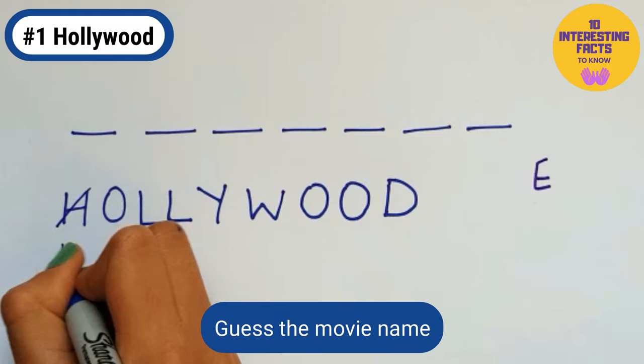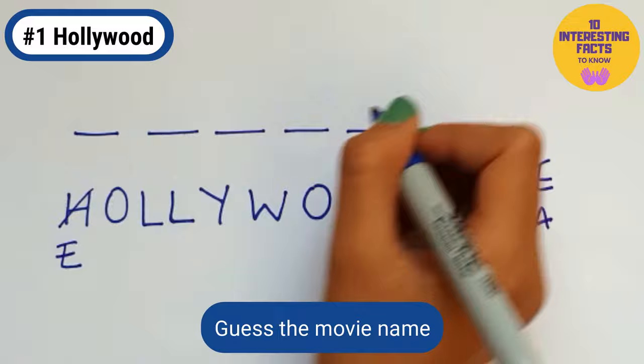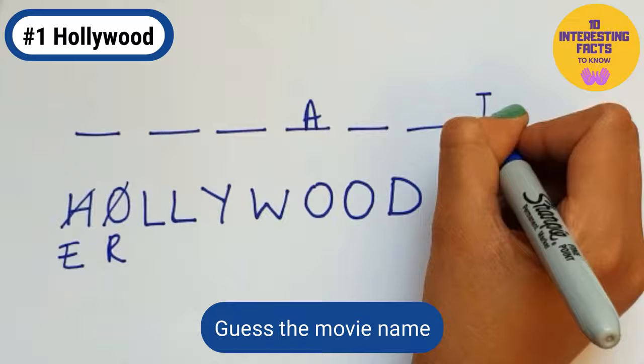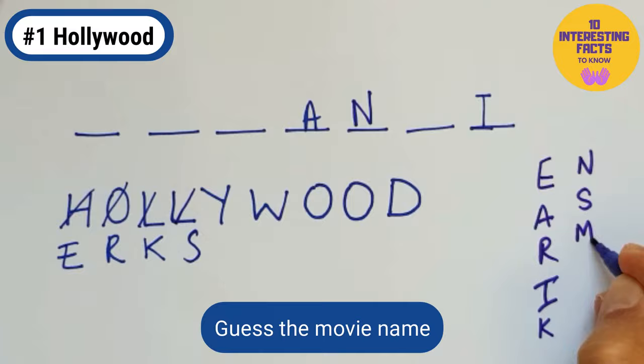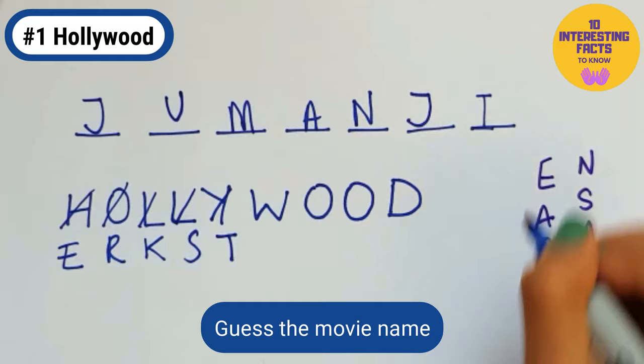Here's the first wrong guess and here comes the right one. Player 2 has to guess the movie before all the letters in Hollywood are crossed out or they lose. Do you know the movie name? Let's see if you can guess it before player 2. Player 2 has got it! Hurray!